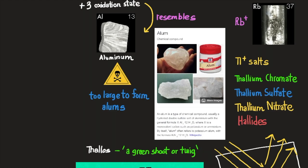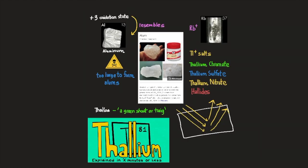By itself, alum often refers to potassium alum, with the formula KAL2-12H2O, according to Wikipedia. The very close similarity in size of the singly charged thallium ion, TL+, and the rubidium ion, RB+, makes many TL+ salts, such as the chromate, sulfate, nitrate, and halides, isomorphous, i.e. have an identical crystal structure to the corresponding rubidium salts.